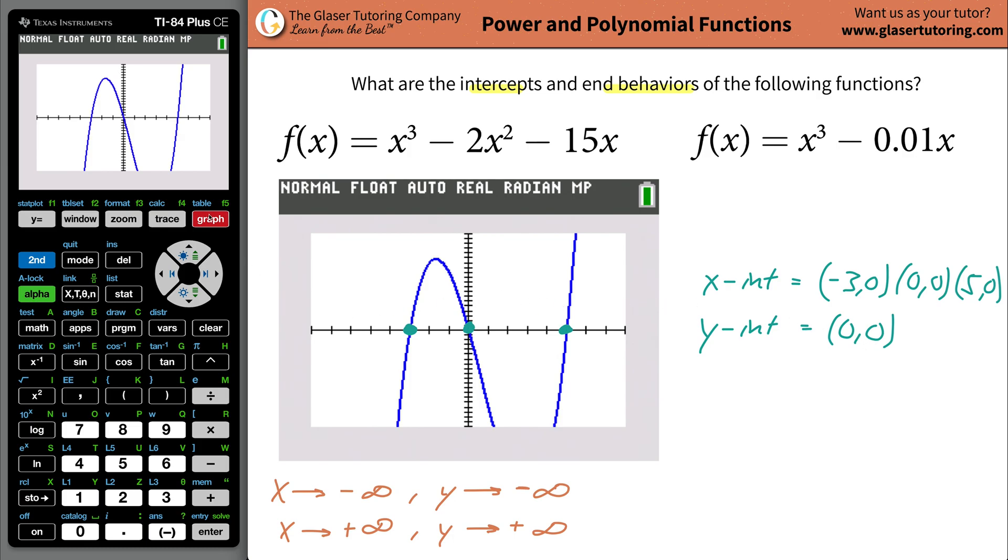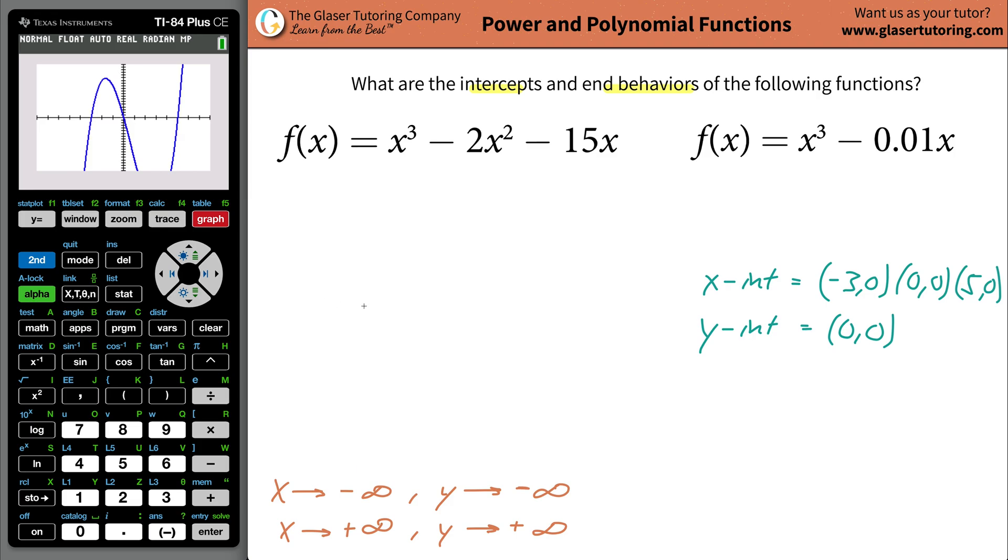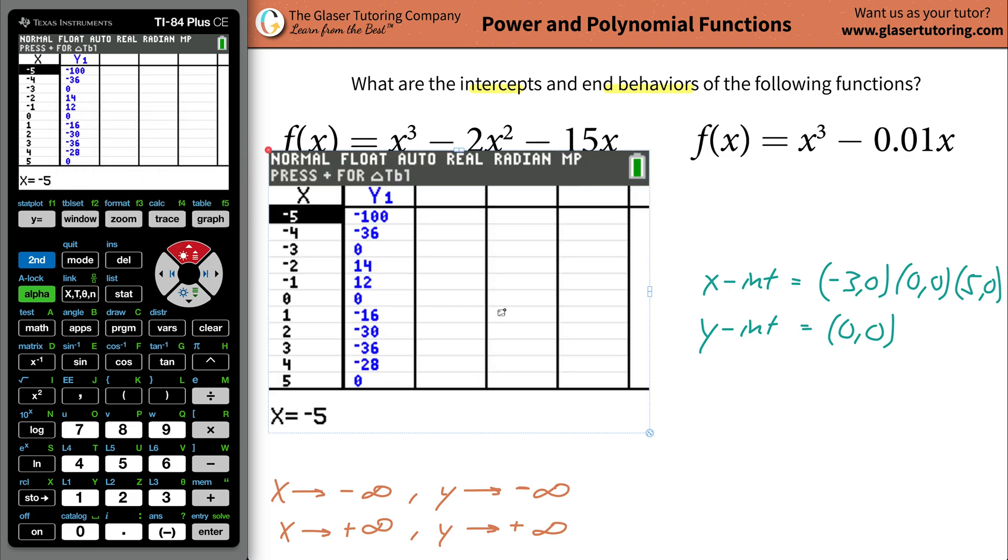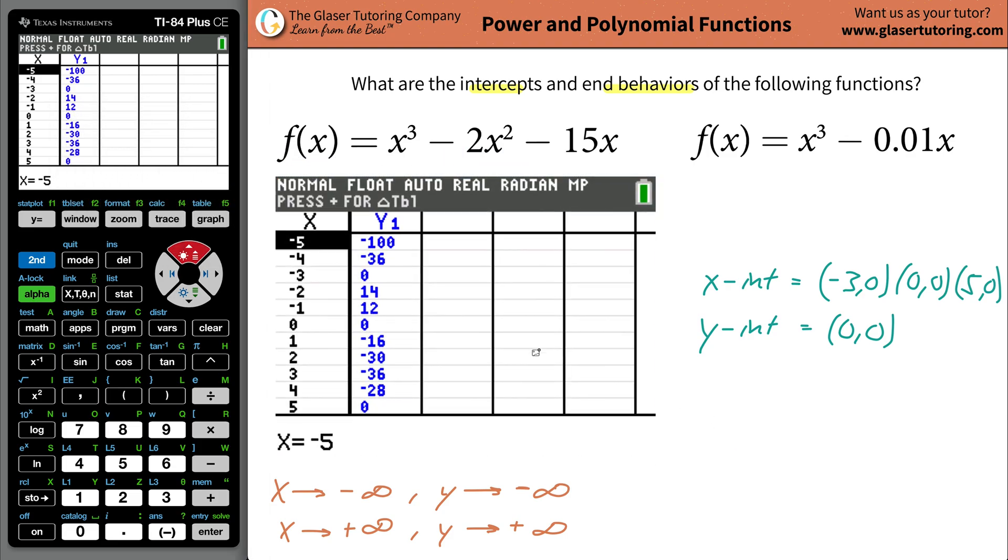Now if you wanted, you can also go to your table function. So go to second table. And here we have a table output now. Let me get within the range here. So let me copy that table on in. So my table, as you can see, it's incremented by one unit every time.